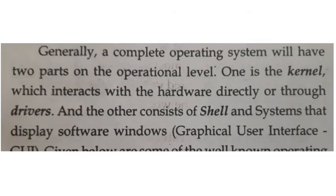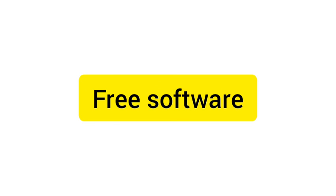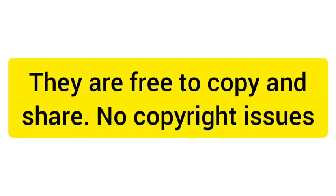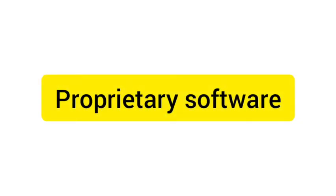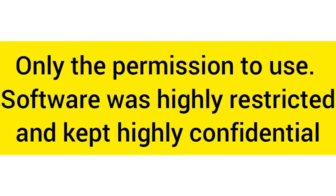General structure of an operating system: generally a complete operating system has two parts at the operational level. One is the kernel, which interacts with the hardware directly or through drivers. The other consists of the shell and a system that displays software windows — that means the graphical user interface (GUI). Free software is free to copy and share with no copyright issues. Proprietary software has highly restricted permissions and is kept highly confidential.